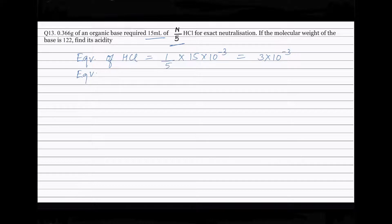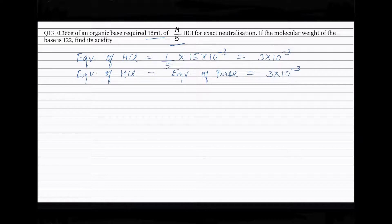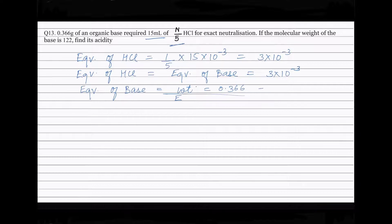Therefore, equivalents of HCl will be equal to equivalents of base, and this is equal to 3 into 10 to the power minus 3. Equivalents of base is equal to weight divided by equivalent weight. The weight of the base is given as 0.366 grams, and equivalents of base equals 3 into 10 to the power minus 3. Solving this, we get the equivalent weight of the base equal to 0.366 divided by 3 into 10 to the power minus 3, which is equal to 122.